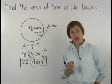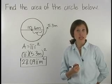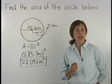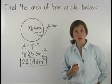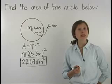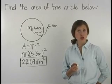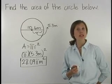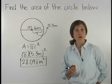Now, remember that pi is approximately equal to 22 sevenths, or 3.14. So we can estimate the area of the circle by plugging in 3.14 for pi.